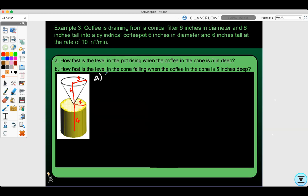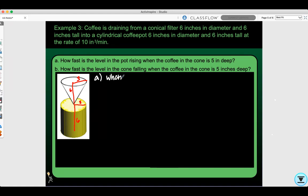For part A, when dV/dt is 10, what is dh/dt? We know r equals 3. They're talking about the level in the pot, not the cone. The volume of the pot is πr²h. Since r is 3 and constant, the volume is 9πh.